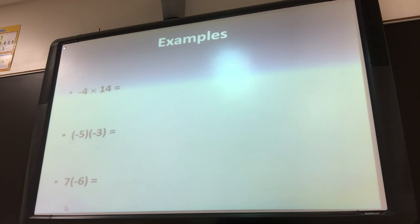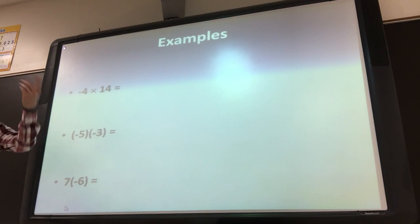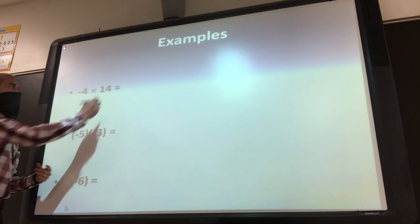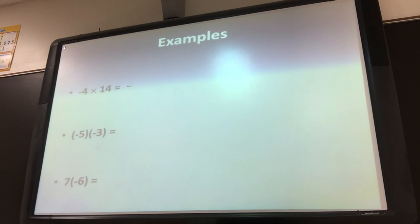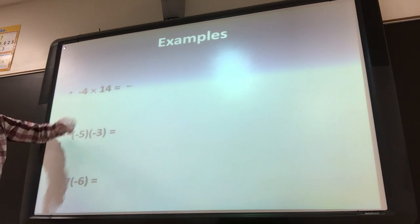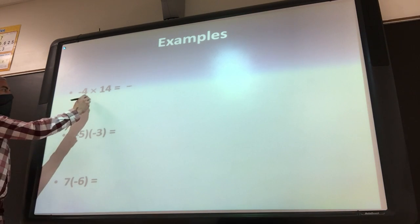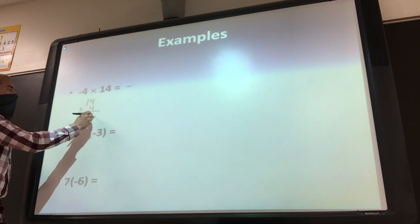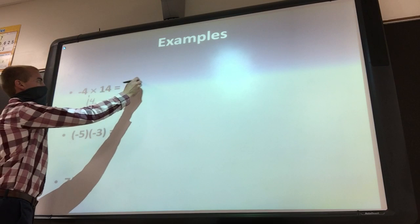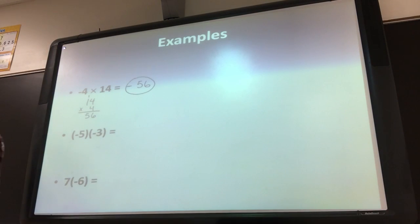Let's look at a few examples. With multiplying, the first thing I would do is make sure you know if it's going to be a positive or negative answer. We have a negative times a positive, so your answer is going to be negative. Go ahead and put that negative sign right there. I can't tell you how many points students miss because they just forget a negative sign. Make sure you get that negative down first. Then do 14 times 4, which gets you 56. So negative 4 times 14 is going to be negative 56.